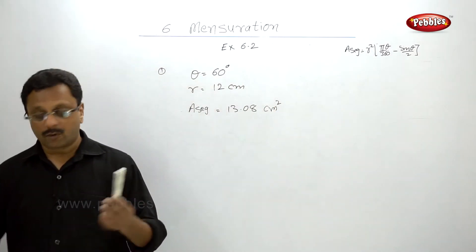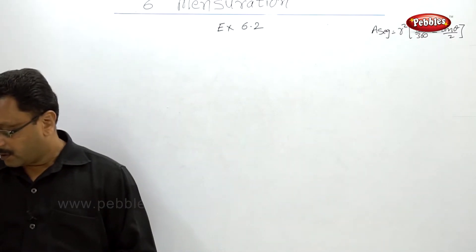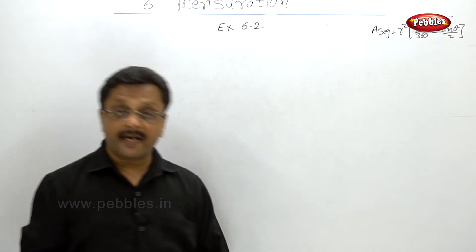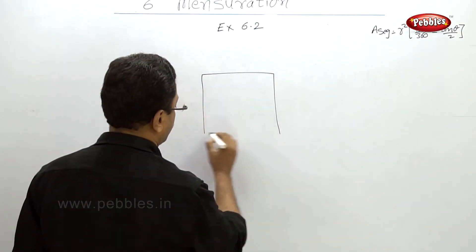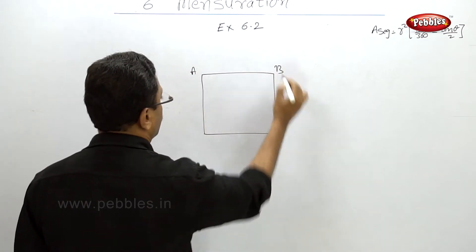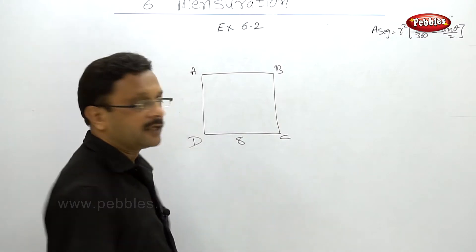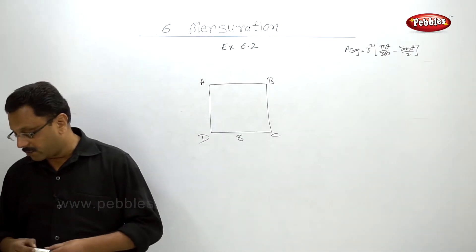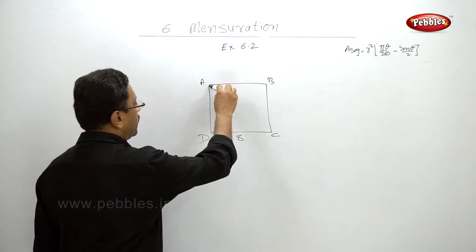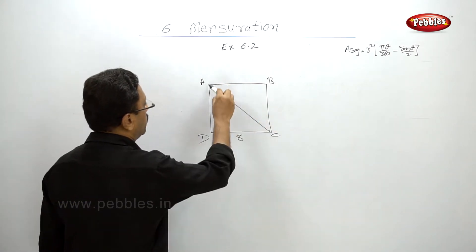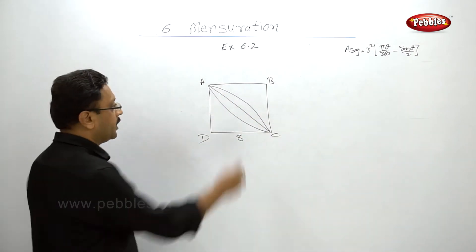Don't forget to write the units. Let us go to the next example. Here, ABCD is a square with side 8 centimeters — that means all sides are 8 centimeters. Calculate the area of the shaded region. They have connected diagonals and two arcs, and they are asking for the area of this shaded region.